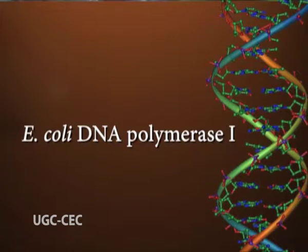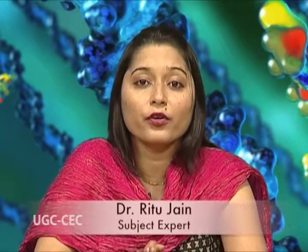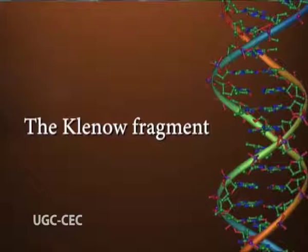E. coli DNA Polymerase I was discovered by Arthur Kornberg in 1960. It has both 3' to 5' and 5' to 3' exonuclease activities, which limits its usefulness in DNA manipulation. It catalyzes the template-directed polymerization of nucleotides into duplex DNA in a 5' to 3' direction. DNA Polymerase I possesses a 3' to 5' exonuclease activity or proofreading function, which lowers the error rate during DNA replication. It also contains a 5' to 3' exonuclease activity enabling nick translation.